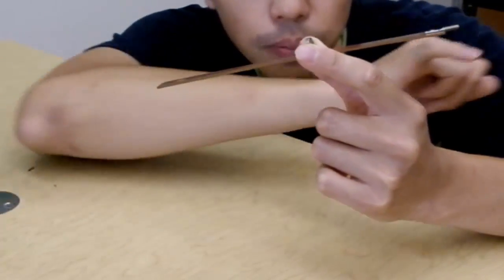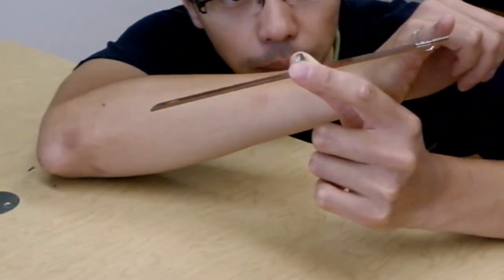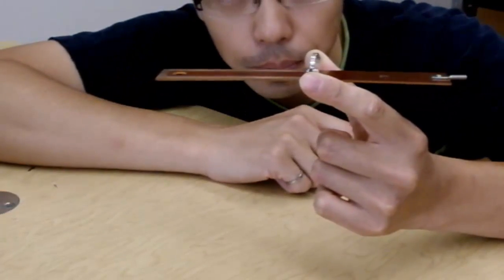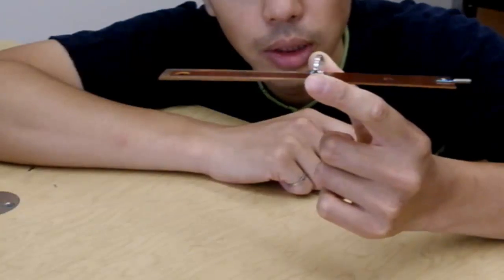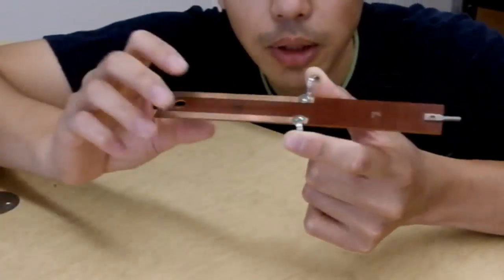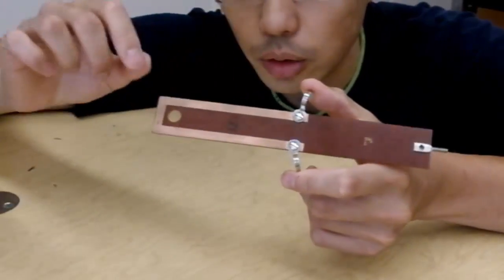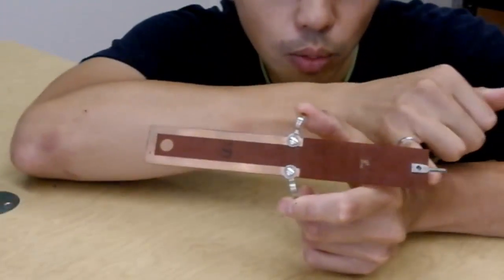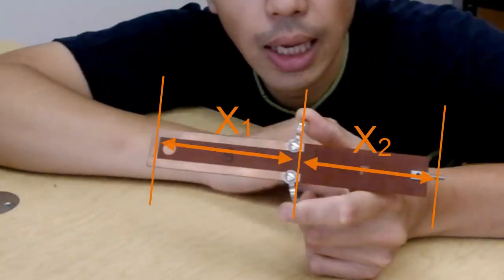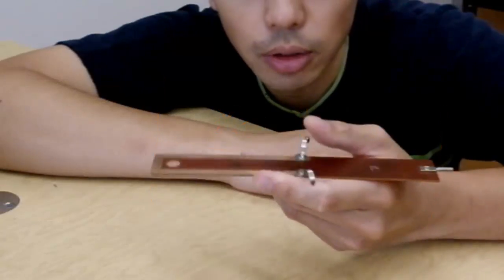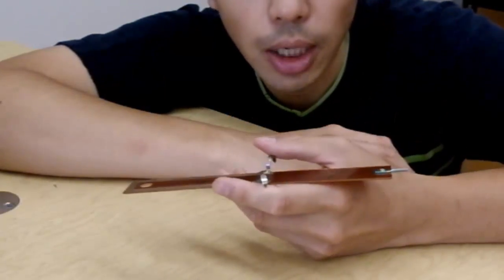So to balance that out, we can add weights on this side that we know, and therefore we can find out how big the magnetic force is. There's one slight complication because the distance from the pivot point to where it feels the force and to where we put the weights on is different. We have to account for that by measuring both of these lengths. So now let's put it into the actual setup.